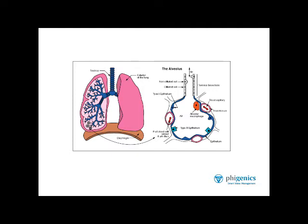The alveolar macrophage is very effective with all kinds of bacteria, viruses, and other particles, but has a big-time problem with Legionella bacteria, because Legionella infect the alveolar macrophage and do just what you saw in that previous video. Lysis from the infected white blood cells causes a massive infection in the lung, and that leads to pneumonia.